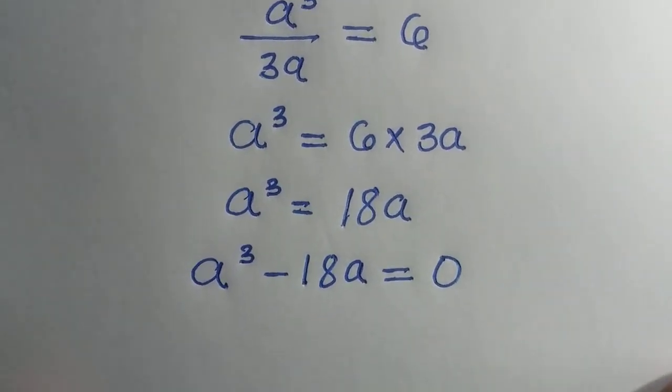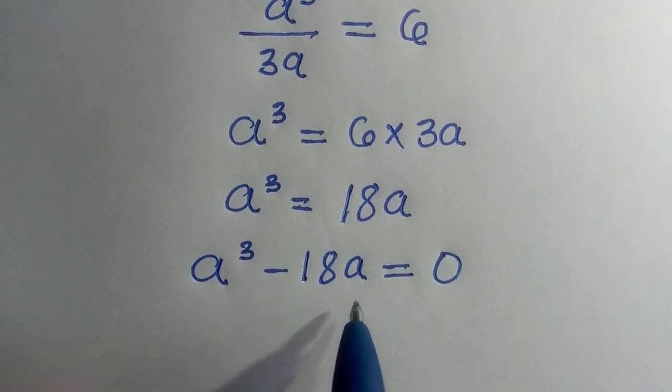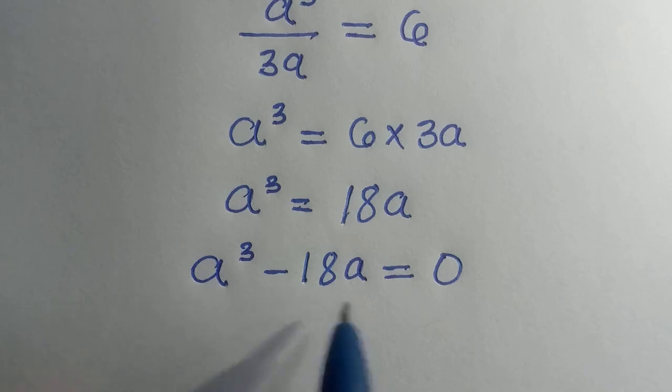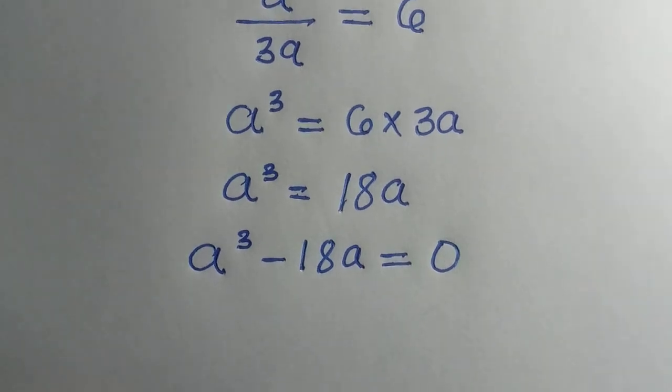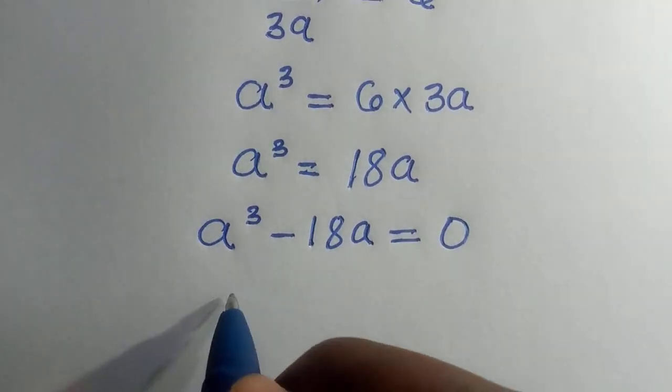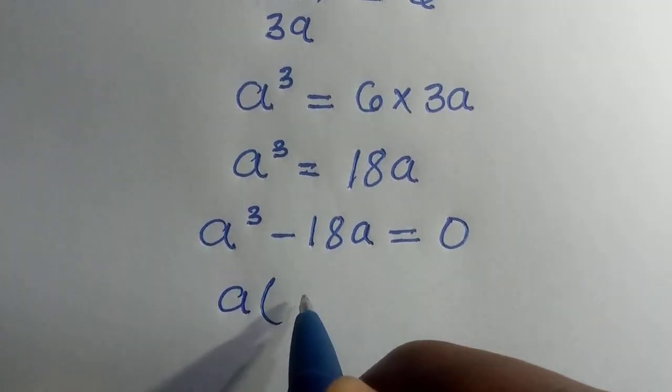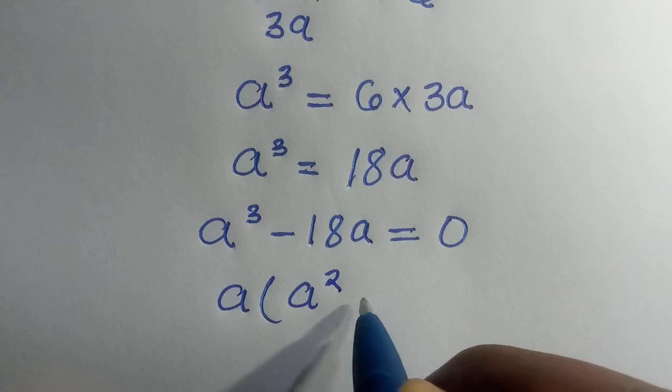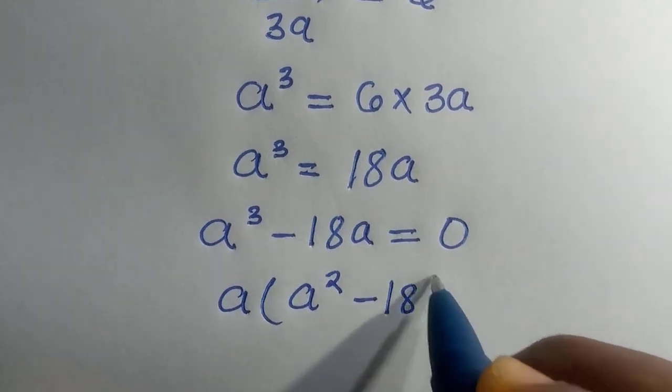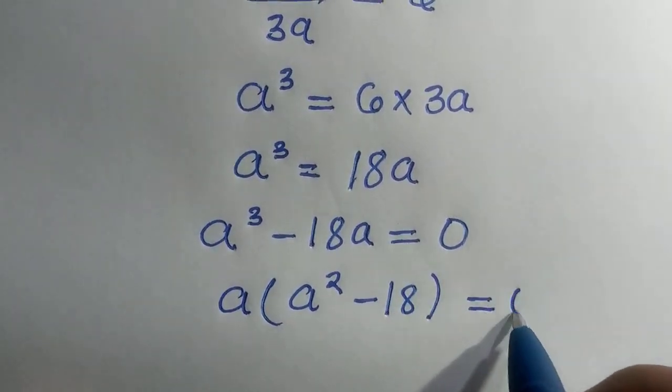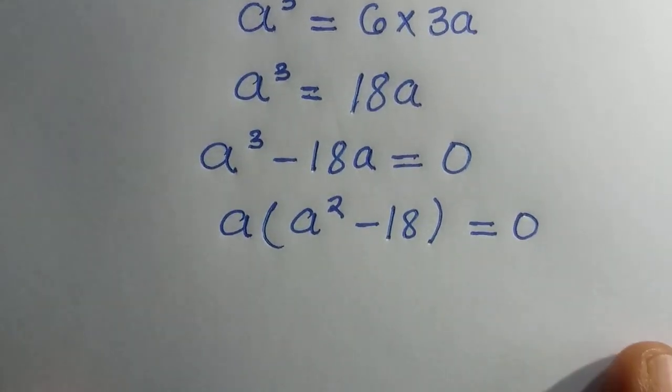So having this value, we are going to factor out a. Since we have a here and we have a here as well, which are factorizable. So by factoring out a, we have a raised to the power of 2 minus 18 equals 0.